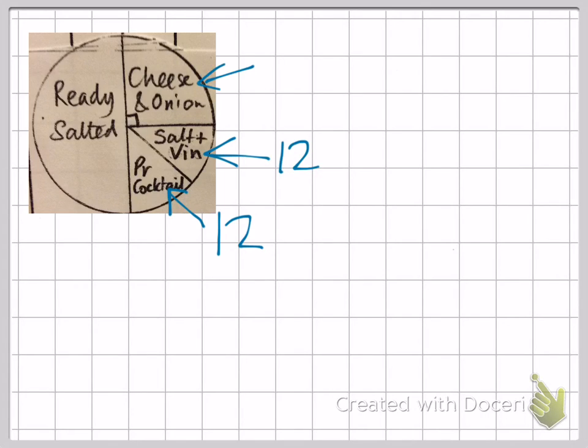Cheese and onion is a quarter of the circle, which is double the amount that salt and vinegar takes up, so that would be 24. And ready salted is double the quarter of the circle, so that would be 48.